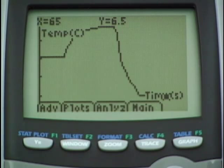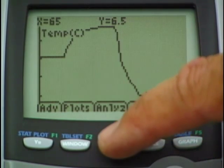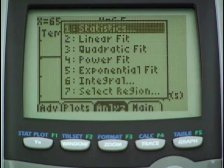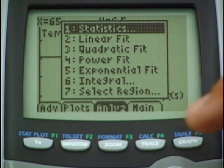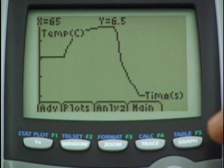We're on the graph screen. In the graph screen we have access to analysis options. I can choose this analyze menu and you can see there's some options there for analysis. We may look at that at another time.